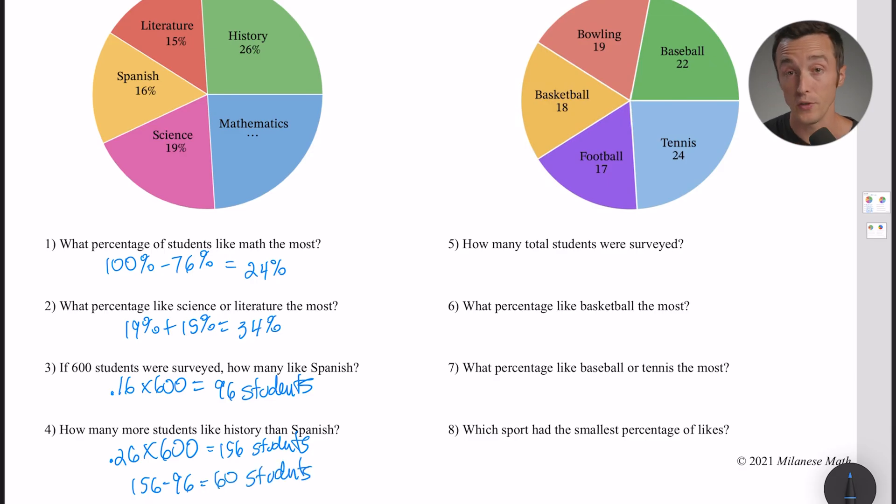Alright, let's move over to another graph. Now this one is still a circle graph, but it's not listing the percentages. If I take a glance at that, it looks like it's some different sports and this looks like raw data. In other words, I'm assuming they surveyed some students or something and asked what's your favorite sport? 19 of them picked bowling, 22 of them picked baseball, and so on. This is not already figured out as a percentage. So number five says how many total students were surveyed? How would you figure that out? Obviously you're just going to add them all up, right? So if you add up all five of those numbers, you're going to get 100.